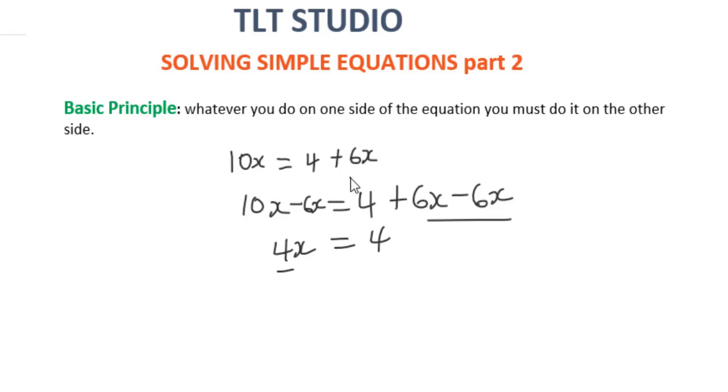Alright, so we are just going to divide by 4. Anything we do on the left side, we do it on the right hand side. So this is going to leave us with x equals 1.